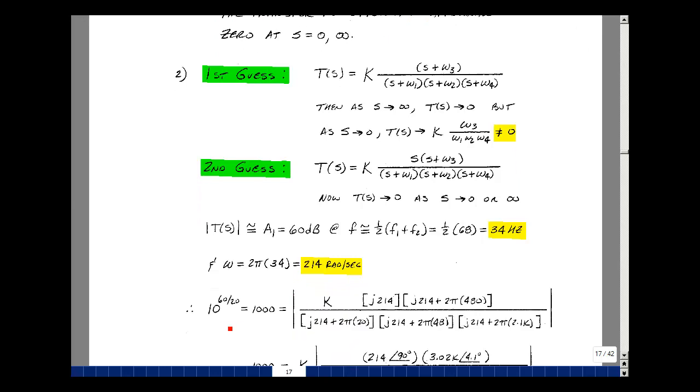So we'll take our transfer function and then put that information in. What is 60 dB? Well, 10 raised to the 60 divided by 20 would equal 10 to the 3, or 1,000. So the magnitude of our transfer function, after you plug in S equals jω, we have K, and then we have j times ω, ω is 2π times 34, that'd be 214. And then I have my next term, S, which is equal to jω plus ω3, so j214 plus 2π times the zero that I had at 480 Hz.